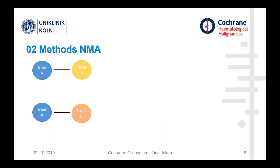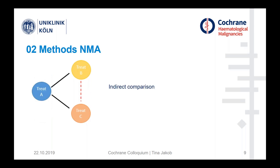We can also have additional treatment options — in this case treatment C — with one study comparing treatment A with treatment B, and another comparing treatment A and treatment C. But what we also want to know is what's better: treatment B or treatment C. Since we have a joint comparator, we are able to calculate an indirect comparison.